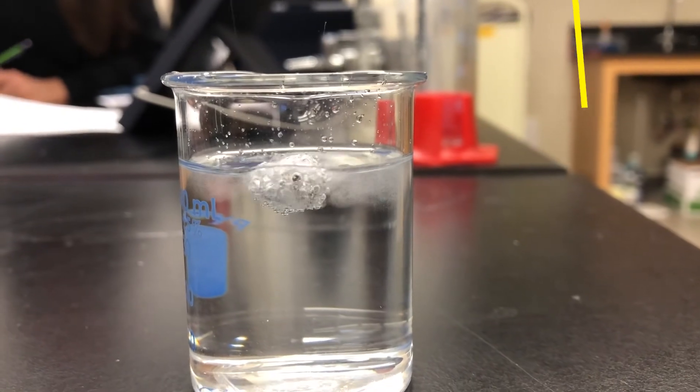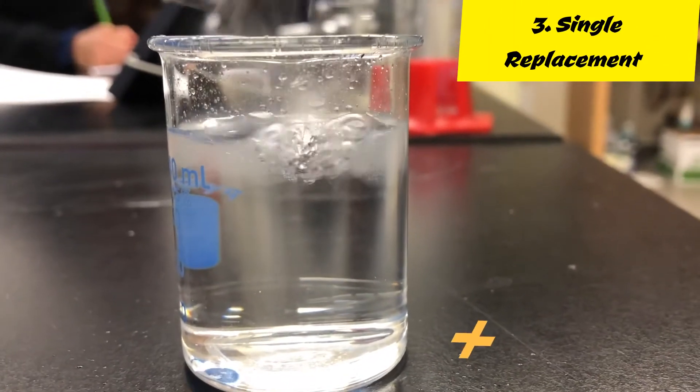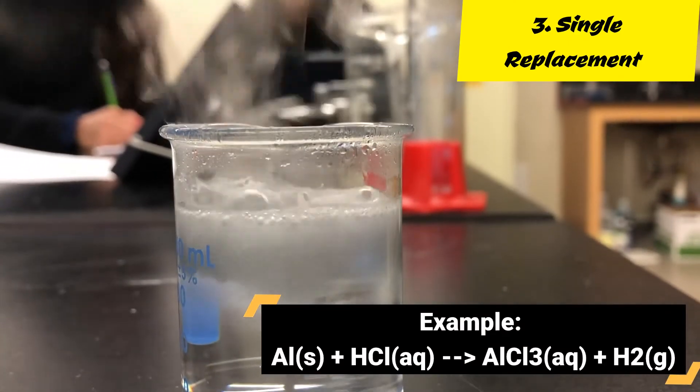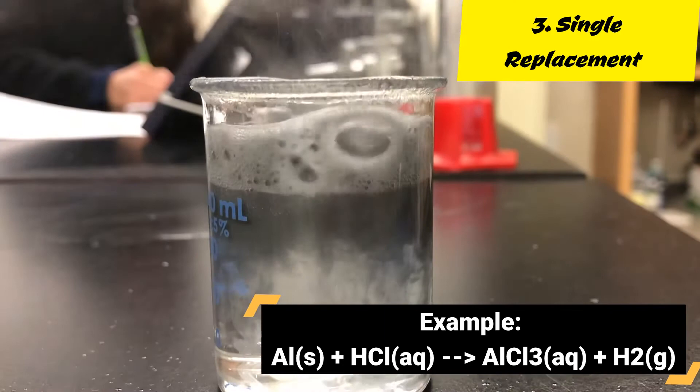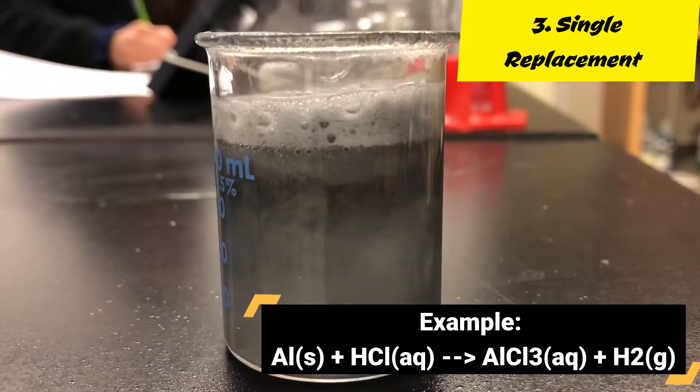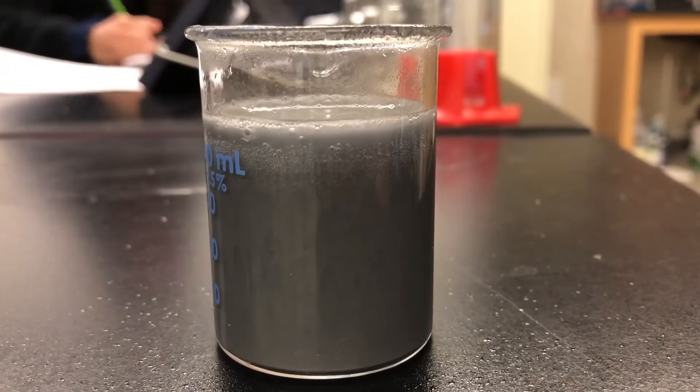Next up, we have replacement reactions. Replacement reactions can happen two ways: single replacement and double replacement. A single replacement reaction happens when a single element replaces one part of a compound. Like right here where you see this aluminum being dissolved in hydrochloric acid, the single aluminum element is going to replace the H in HCl to produce aluminum chloride and hydrogen gas.